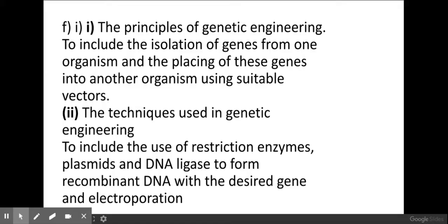First of all, we're going to look at some examples of what genetic engineering might involve. Genetic engineering might be used to manipulate the genome of bacteria so that they produce the insulin that humans need. We could also manipulate the genome of tomatoes by introducing a gene taken from fish that live in Antarctic waters, so these tomatoes won't freeze during cold weather and can be grown at different times of year.